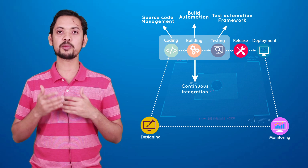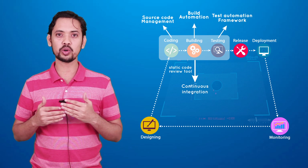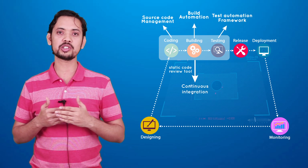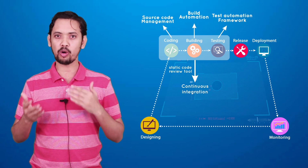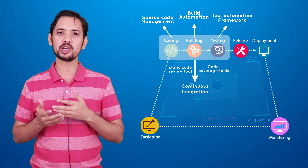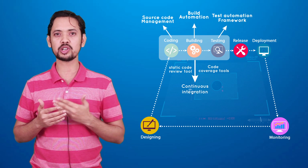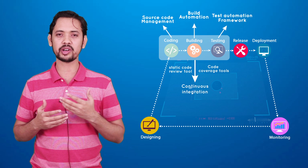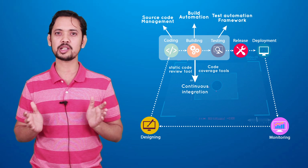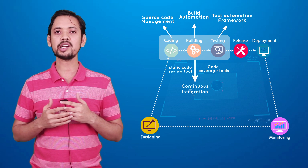There are more things you can include in continuous integration — for example, static code review tools. These tools read and analyze your code, giving automated reviews aimed at finding common bugs or improving code quality. Similarly, there are code coverage tools that measure how much of your code the test cases are covering. If you integrate all these tools — code coverage, static code review, build automation, and testing — that whole thing makes up your continuous integration.